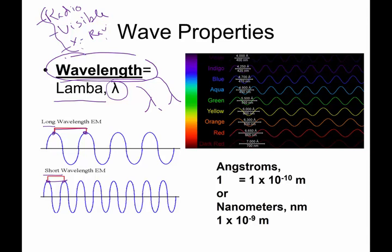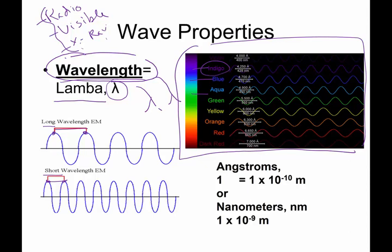So we'll talk more about that in a little bit. I love this image right here. This gives you a visual to help you understand that every color that you and I see has a unique wavelength. Indigo, which is kind of a purpley color, has a wavelength of 4,250 angstroms, or 425 nanometers.